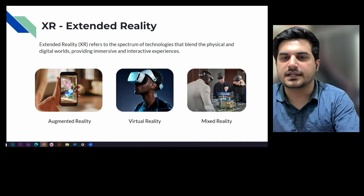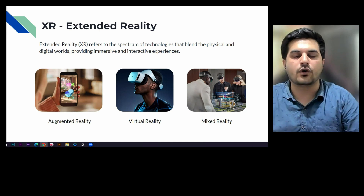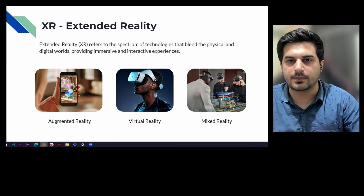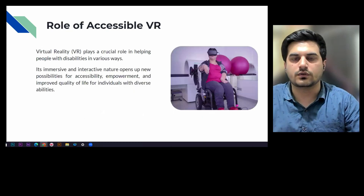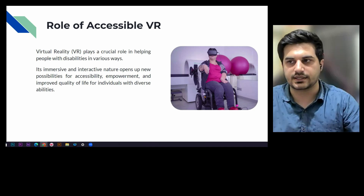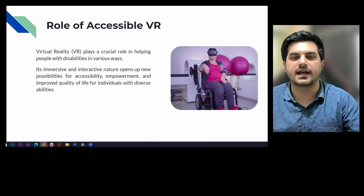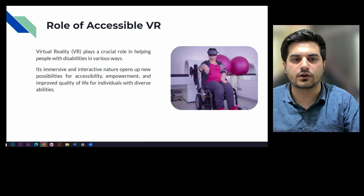XR — that is extended reality — has great potential and can play a significant role in the accessibility space. By leveraging the power of augmented reality, virtual reality, and mixed reality, we can create an inclusive and enhanced environment that can improve the quality of life of people with disabilities. For this VRC, we are focusing on virtual reality and how it can play a crucial role with its immersive and interactive nature, and how it can open new possibilities for accessibility empowerment and improve quality of life for individuals with diverse abilities.